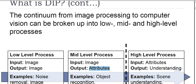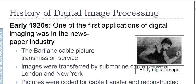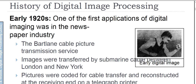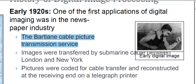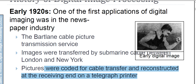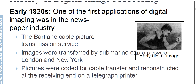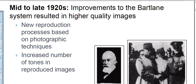Now let's discuss the history of image processing. Going back to the early 1920s, one of the first applications of digital imaging was in the newspaper industry — the Bartlein cable picture transmission service — where images were transferred by submarine cable between London and Europe, coded for cable transfer and reconstructed at the receiving end on a telegram printer. In the mid to late 1920s, improvements to the Bartlein system resulted in higher quality images through new reproduction processes based on photographic techniques.